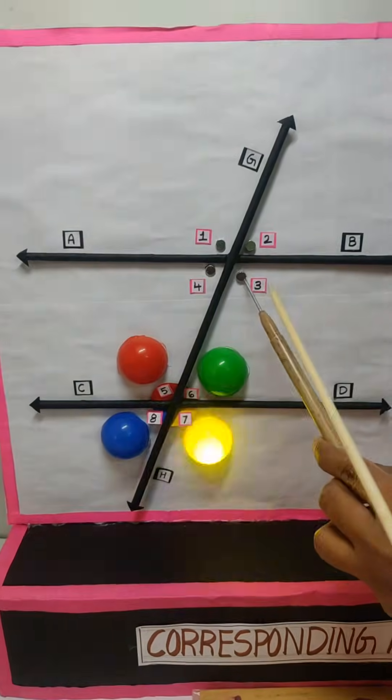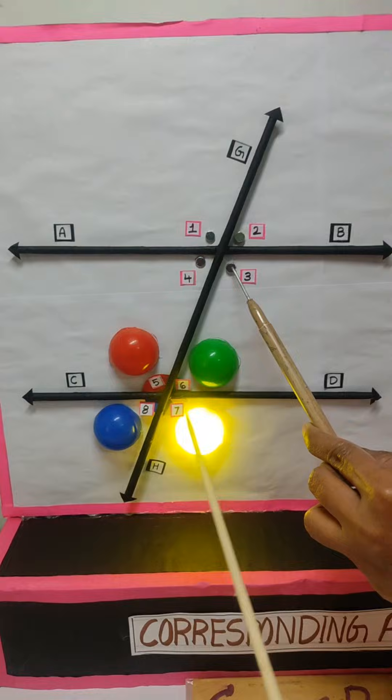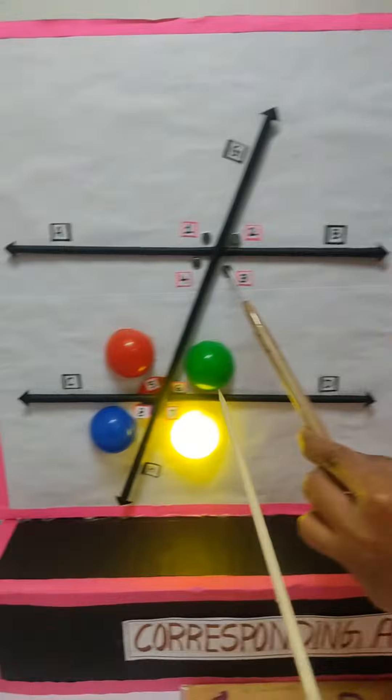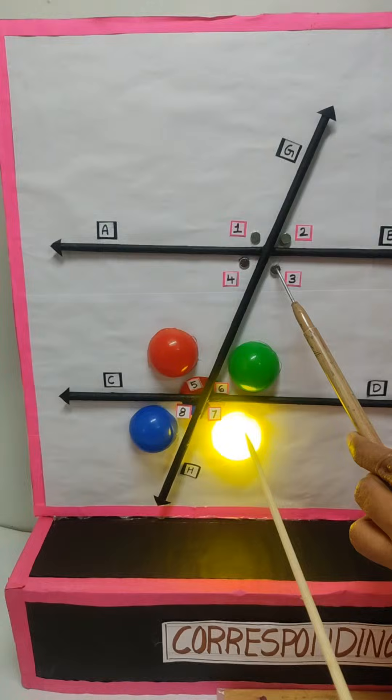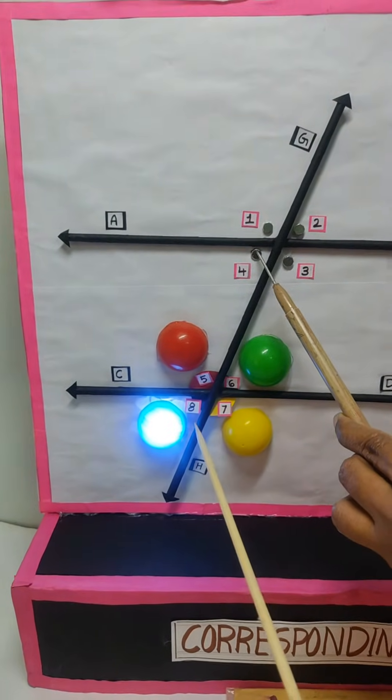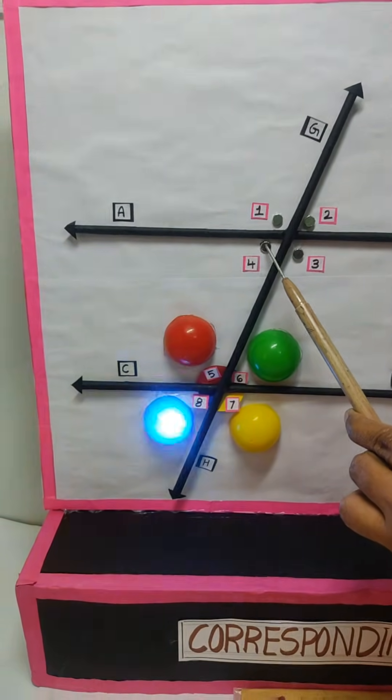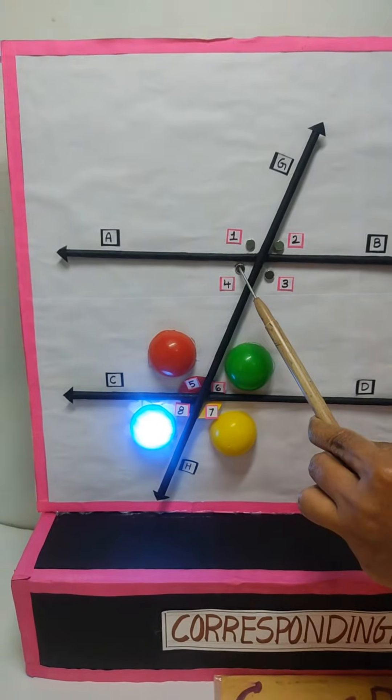Similarly, this angle number three which is corresponding to number seven, which is yellow light, is glowing here. Similarly here, angle four, if you touch, angle eight is going to glow here.